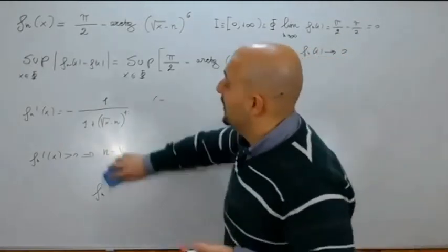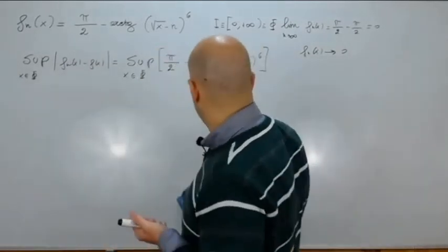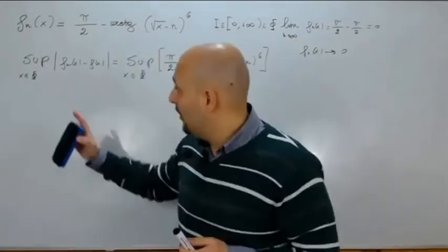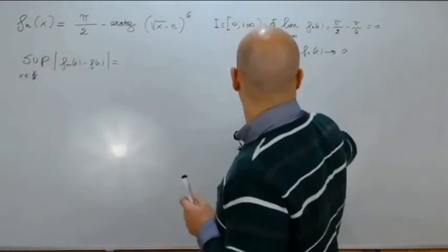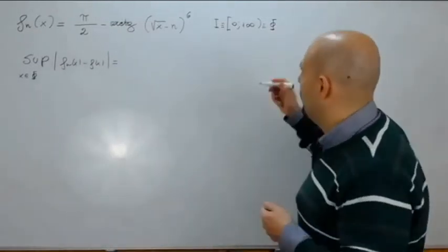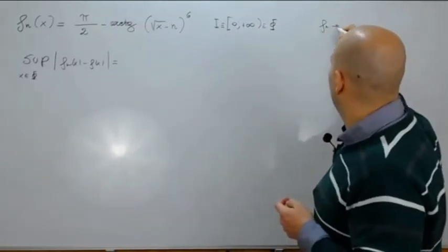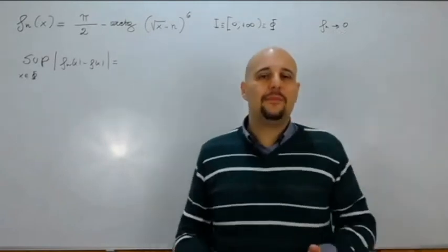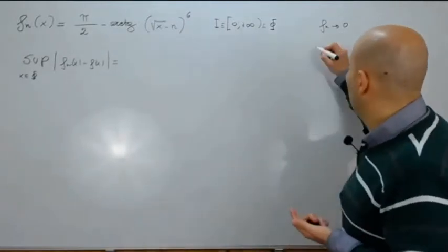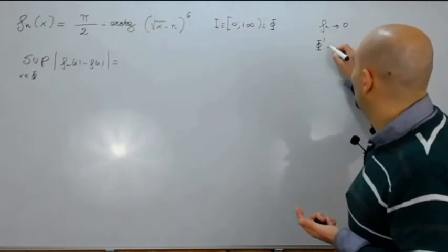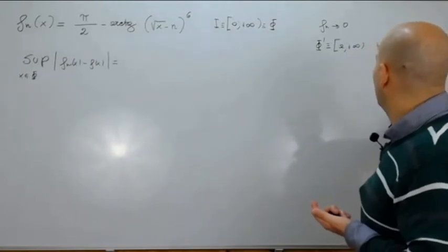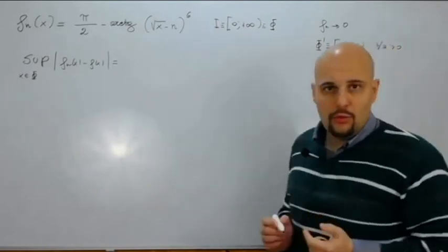Che facciamo allora? Conviene considerare un intervallo di tipo diverso, contenuto in [0, +∞). Quando si parla di intervalli di questo tipo, è molto facile trovare un intervallo opportuno di convergenza uniforme. Se prendiamo un intervallo Θ' = [a, +∞) per ogni a > 0, questo è contenuto in [0, +∞).